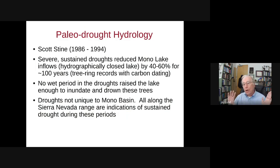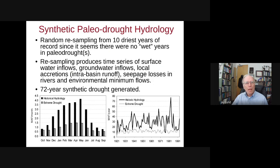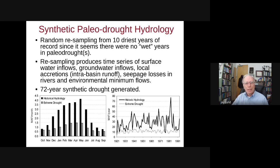He found essentially very large droughts of 100 years or more where the average flow during that period was between 40 and 60 percent of the average flow seen in historical times, with no wet periods during the drought. This seems to have been pretty general for the southern parts of California. To recreate this drought, we resampled the 10 driest years on record and resampled randomly from those 10 events to generate a 72-year synthetic drought — pretty dry compared to historical hydrology.